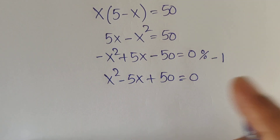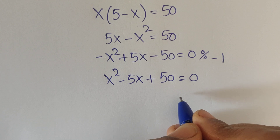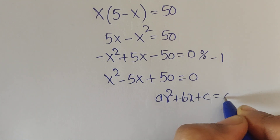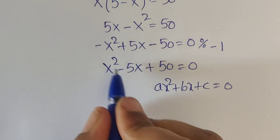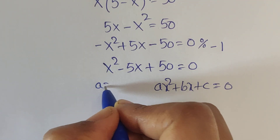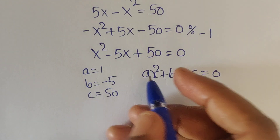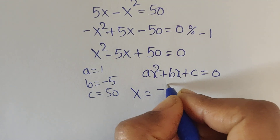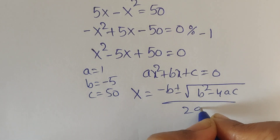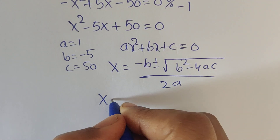This is a quadratic equation. Comparing with the standard form ax squared plus bx plus c equals 0, we identify a equals 1, b equals minus 5, and c equals 50. Applying the quadratic formula: x equals minus b plus or minus square root of b squared minus 4ac, divided by 2a.